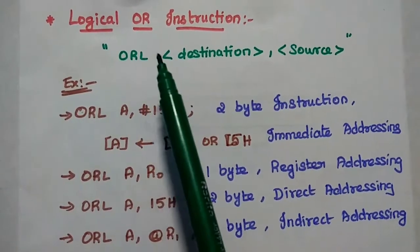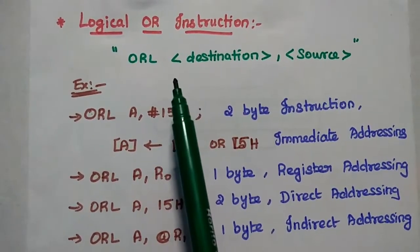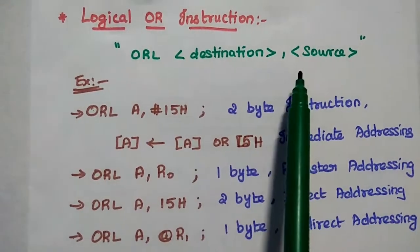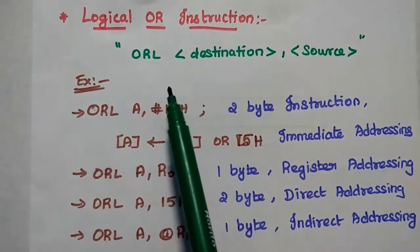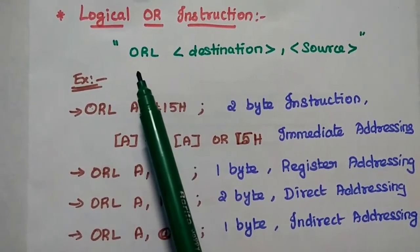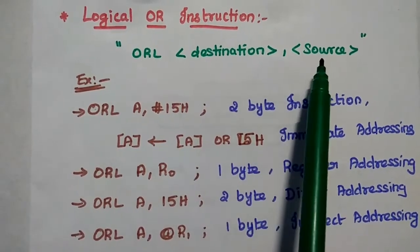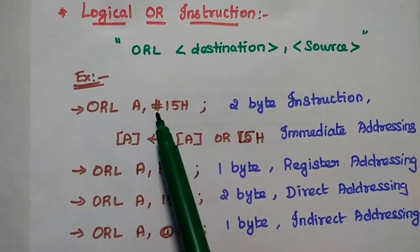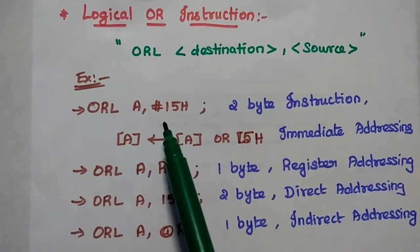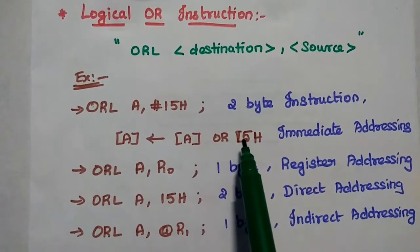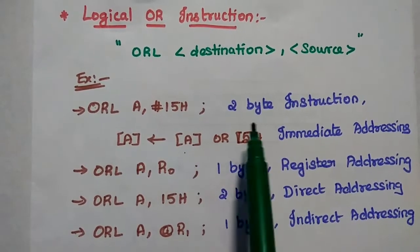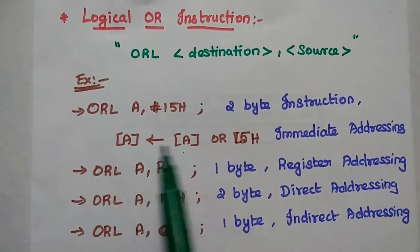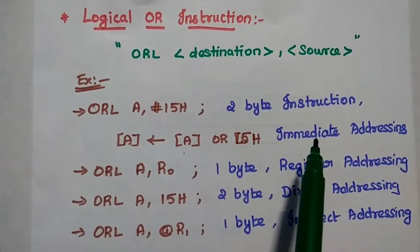The next instruction is the logical OR instruction. It is used to perform the logical OR operation between the destination and source contents, and the result will be stored in the destination. It is represented as ORL destination, source. For example, ORL A, #15H — here hash represents immediate data, so we perform a logical OR between the content of the accumulator and the data 15H, and the result is stored in the accumulator. It is a 2-byte immediate addressing instruction.